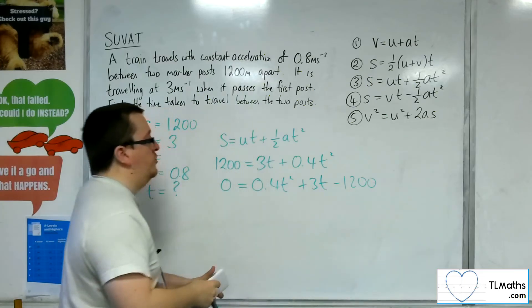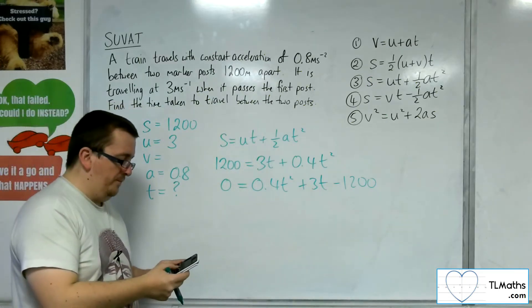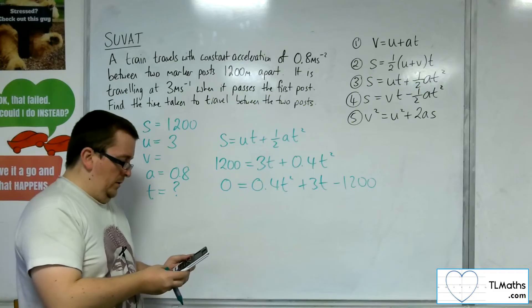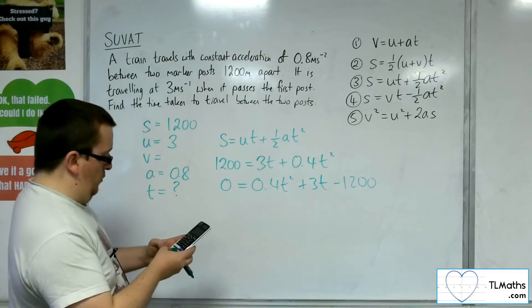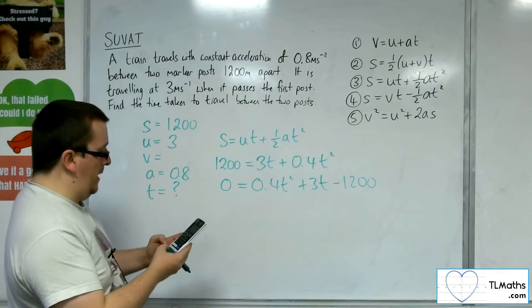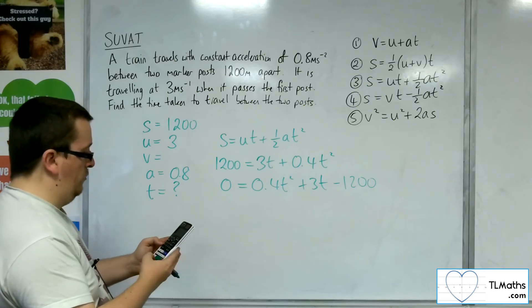Now I'm going to go straight into my quadratic solver. I'm going to put in 0.4x squared plus 3x, take away 1,200.